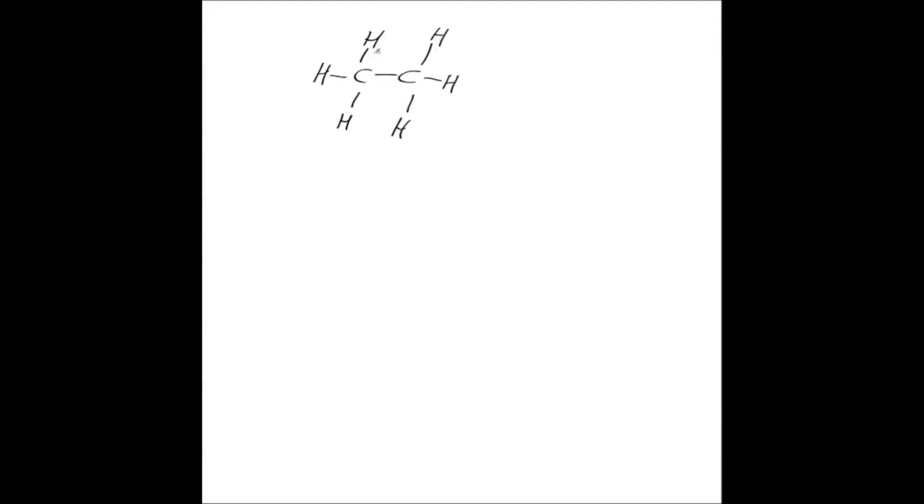Notice here I've got these single bonds, these single lines. The letters represent the elements carbon and hydrogen, and these bonds represent the sharing of electrons between this element and this element. So we call this a chemical bond.